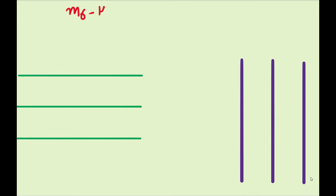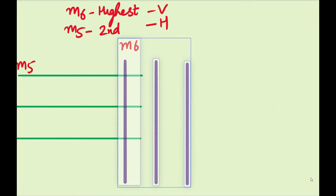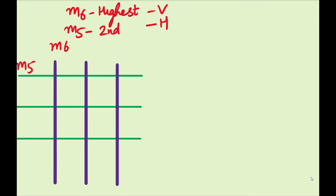In the technology file, each metal layer is assigned a particular color. Let us assume that M6 is the highest metal layer and it is vertical. Lower to that will be M5, which is the second highest metal layer and it is horizontal. The simplest form of power structure will have these layers overlapping. This metal layer is your power, so it is VDD, and alternately the next will be ground, then VDD again.